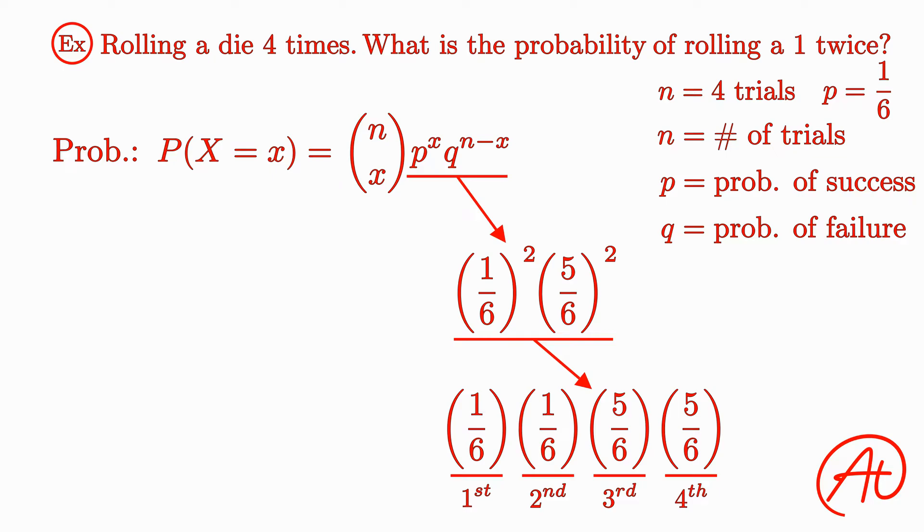But there are other situations that satisfy this as well, right? What if we rolled a 1 on our 1st and 3rd rolls, or on our 3rd and 4th rolls, or any of the other situations that result in two 1s? How do we account for all those possibilities? Well, that's where this thing comes into play, which is pronounced as n choose x.